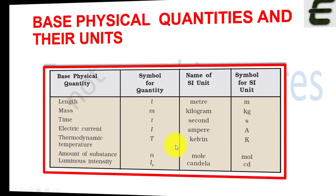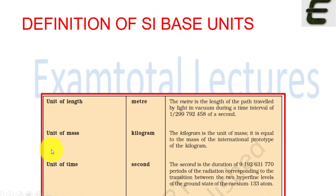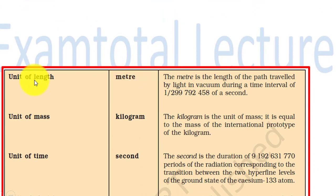These are the definitions of SI base units. The unit of length we define in meters. What is a meter? The meter is the length of path traveled by light in vacuum during a time interval of 1 by 299,792,458 of a second. How much distance light travels in this tiny fraction of a second - that is a meter. Similarly, what is the unit of mass? It is in kg. The kilogram is the unit of mass and it is equal to the mass of the international prototype of the kilogram.